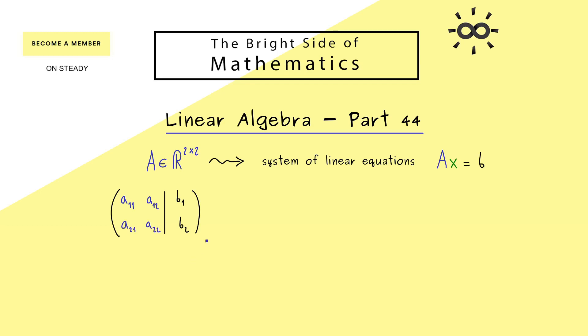And at this point you already know we can simply use the Gaussian elimination to solve this system of linear equations. However, in order to make this work, let's assume that our first entry here is non-zero. In other words, we just restrict which matrices A we can choose here.